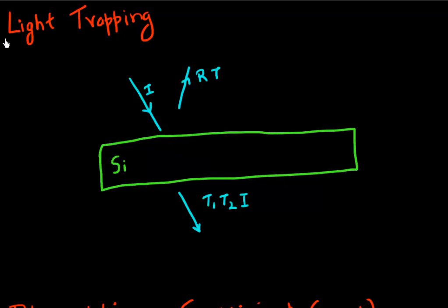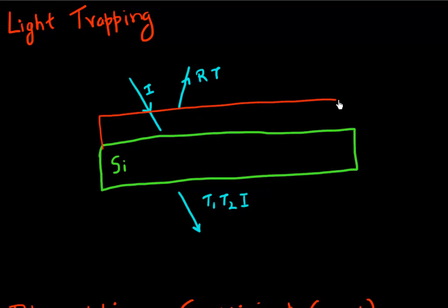We were talking about how to reduce the amount of light which is reflected back from the surface. We figured out that a nice way would be to put an anti-reflective coating, and that would try to maximize the amount of light which goes into the silicon.